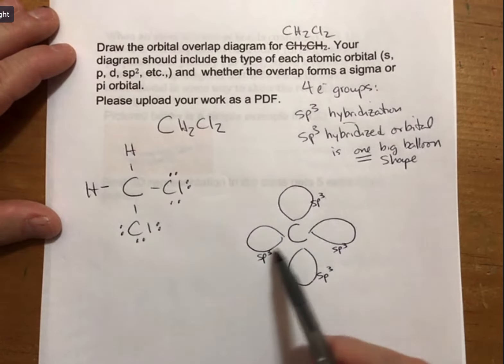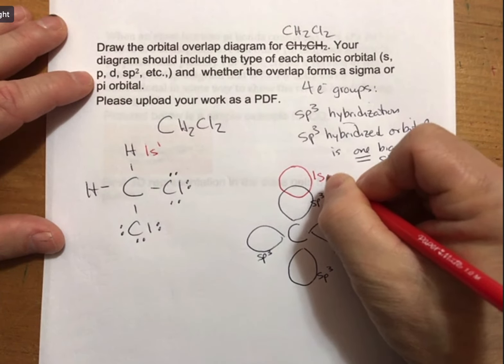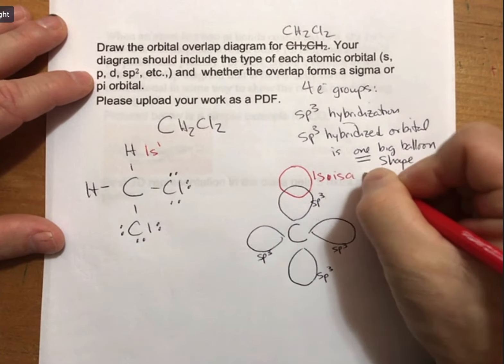Now I'm going to draw my H's here. Hydrogen has an electron configuration of 1s1. That means its orbital that bonds with carbon is a 1s orbital. I'm going to draw it as a sphere. It's a hydrogen, so I'm going to write H in it. There's one electron from the 1s1.